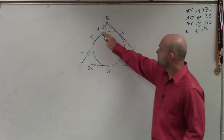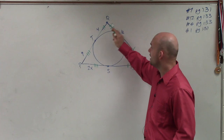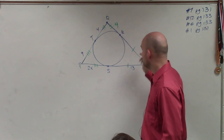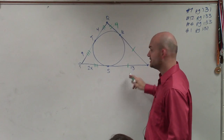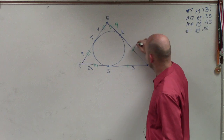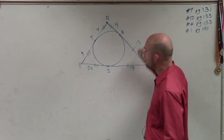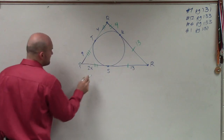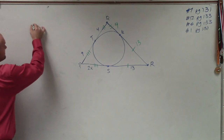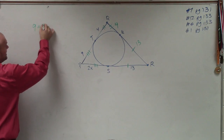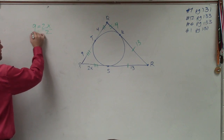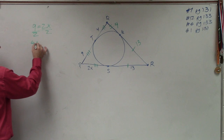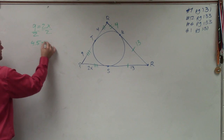So if this is 4 and this is the same, then that has to be 4. If this is 13 and that's the same, that has to be 13. Now these two have to be the same, so I have to solve. So 9 equals 2x, divide by 2, 4.5 equals x.